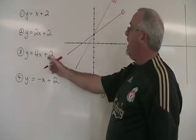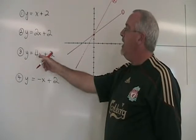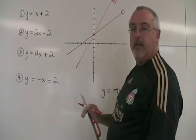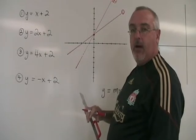If we double the slope again, as in equation 3, m is now 4. This again cuts the distance between the line and the y-axis in half.